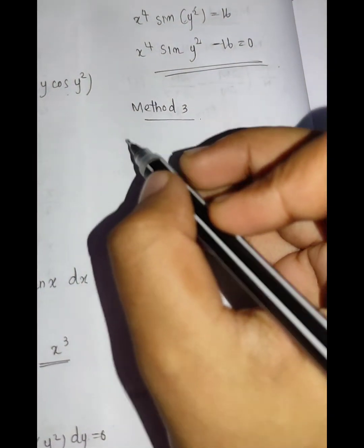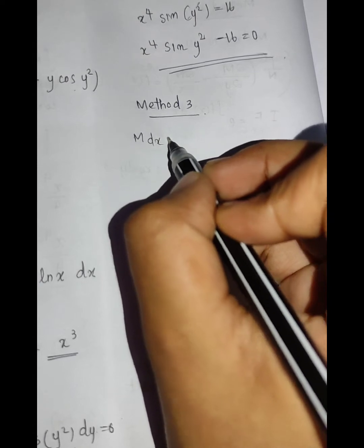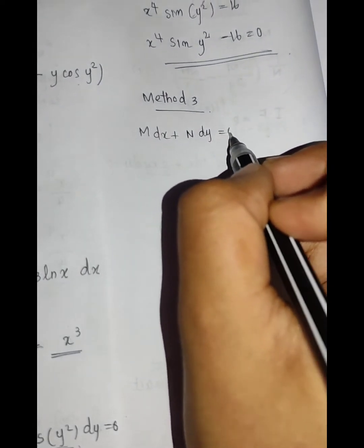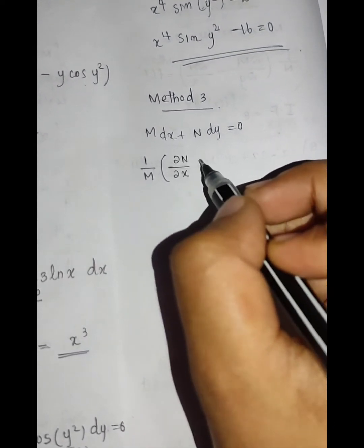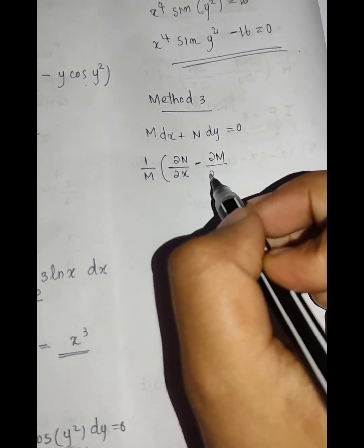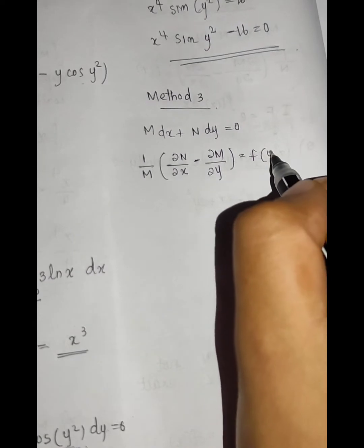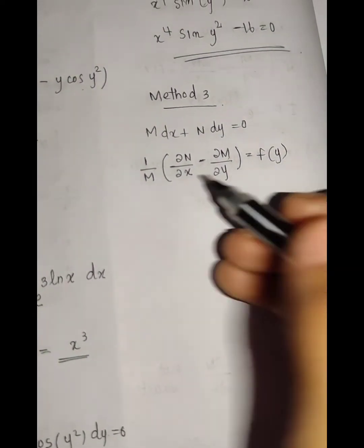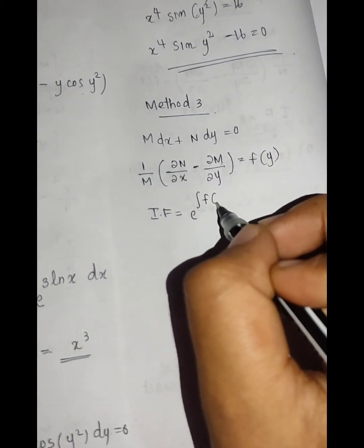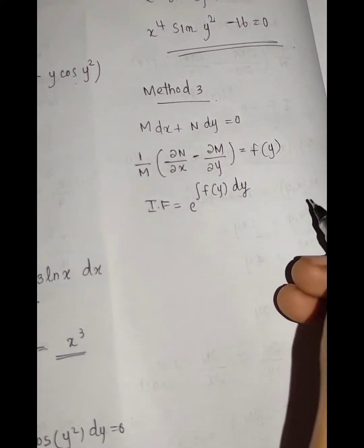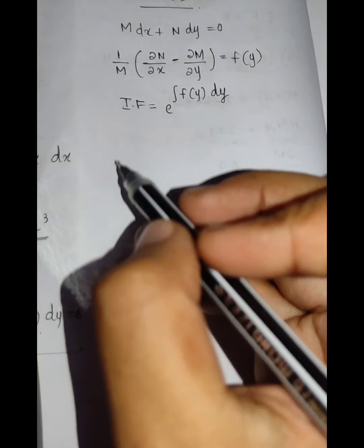This was method 2. Now we have method 3. For M dx plus N dy equals 0, we compute 1/M times (∂N/∂x minus ∂M/∂y) equals f(y). The integrating factor is e raised to the integral of f(y) dy.